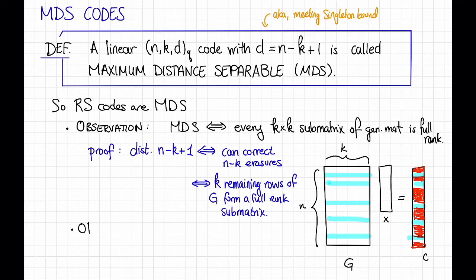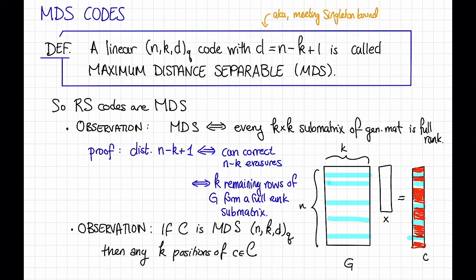Another observation is that if C is an MDS code with parameters N, K, D, and Q, then any K positions of the code word C determine the entire code word. This is just another way of saying that the code can correct N minus K erasures, but sometimes it's nice to think about it in this way instead.